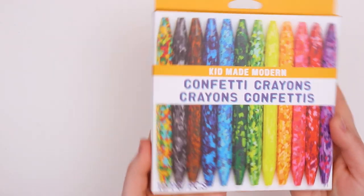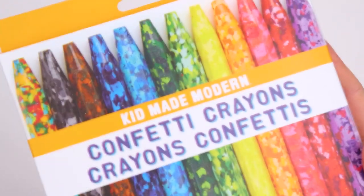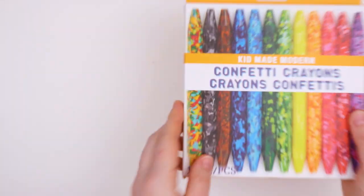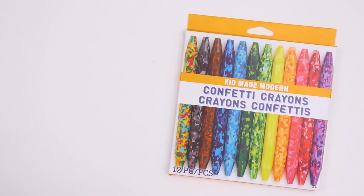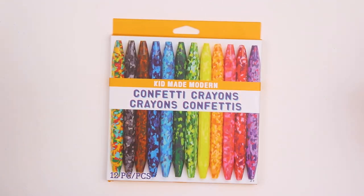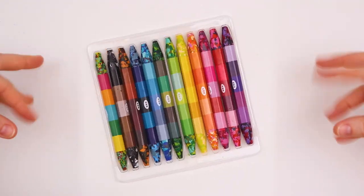The year 2021 must be the year of the crayon for me, because today we are going to be playing around with these confetti crayons made by the same brand that actually made the 15 and 64 color crayon, Kid Made Modern. Not a sponsor somehow. Either way, I say we just get into it and start doodling with these crayons.